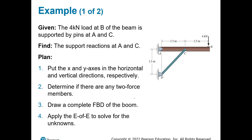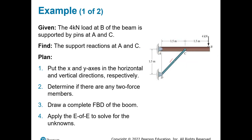Here's our first example. We have a beam AB and another element DC. We need to find the support reactions at A and C. The plan: place X and Y axes in horizontal and vertical directions, then check for two-force members. We can identify one here with a reaction and another here — therefore those forces are equal, and we'll use that to our advantage. Then draw the free body diagram.